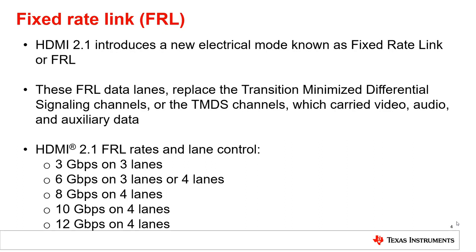HDMI 2.1 supports fixed-rate link rates and lane configurations as follows: 3 gigabits per second on 3 lanes, 6 gigabits per second on 3 or 4 lanes, 8 gigabits per second on 4 lanes, 10 gigabits per second on 4 lanes, and 12 gigabits per second on 4 lanes.